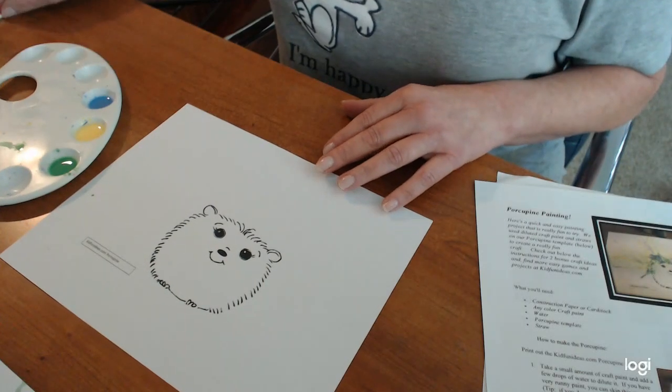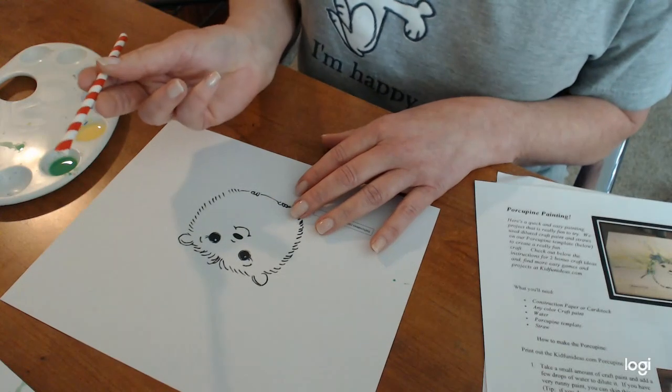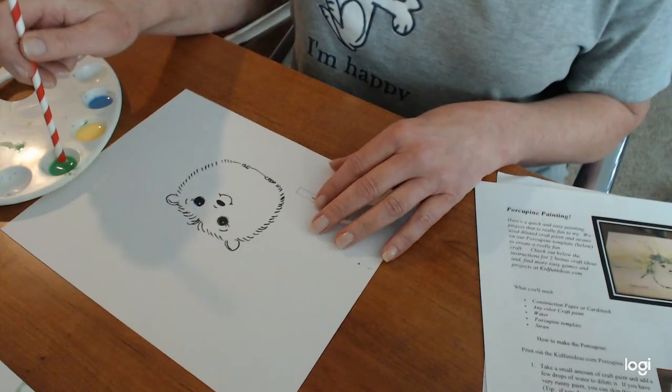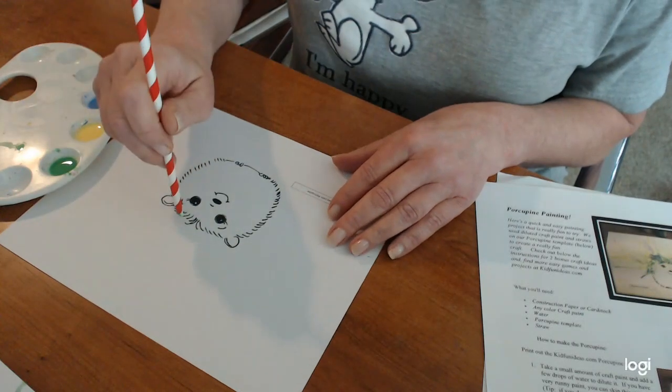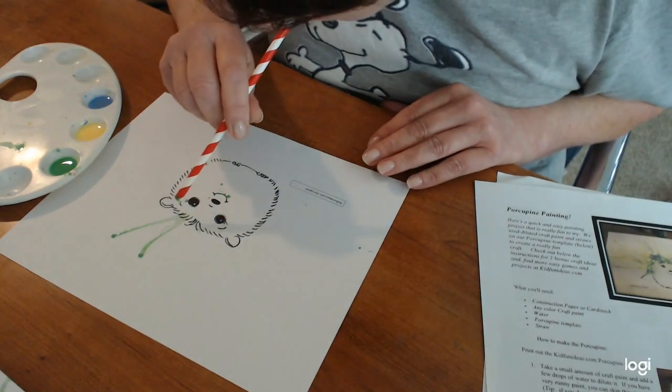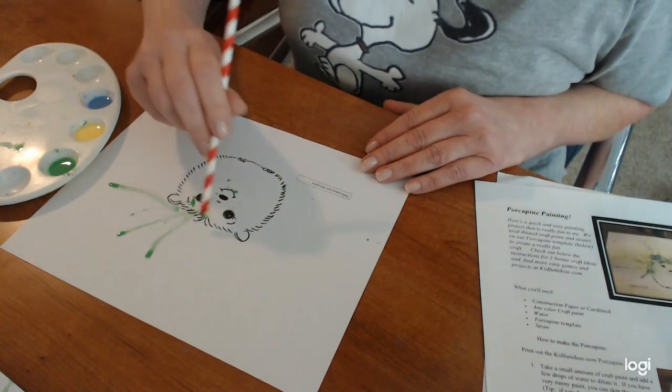Food coloring works great for this project because it's nice and dark and you can see where the tendrils go. The way you work it is you dip the squashed end of your straw into the paint, and that'll pick up enough paint to drop on your picture like that. Then you just blow until all of the porcupine is filled in.